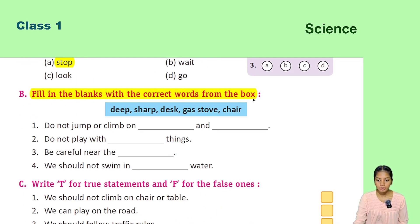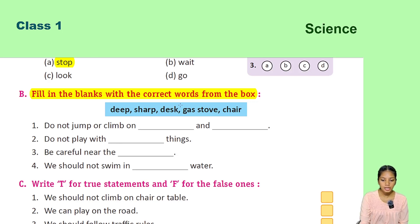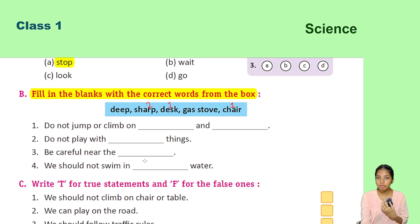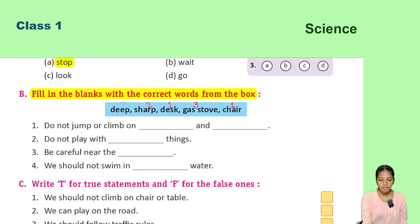Fill in the blanks with the correct words from the box. Do not climb or jump on desks and chairs. Do not play with sharp things. Be careful near the gas stove with hot pans. We should not swim in deep water.